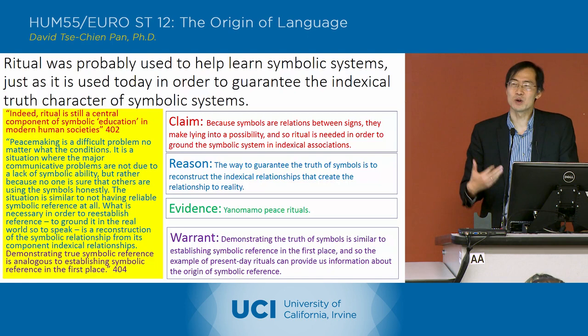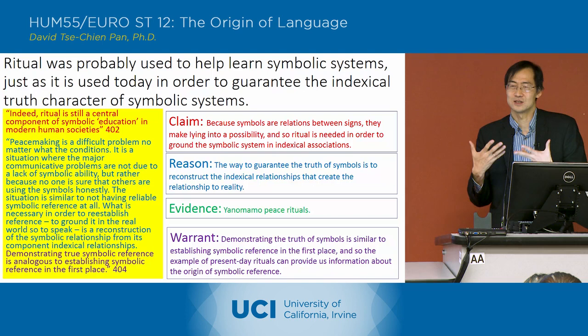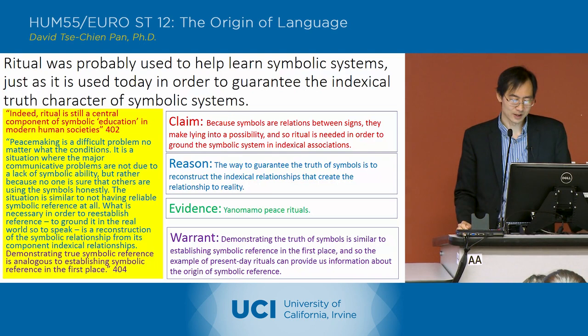He says that in the same way that rituals used today are used in order to guarantee the truth of symbols by reconstructing the indexical relationships upon which the symbol system is based, rituals could have been used to actually establish the indexical relationships that are underneath the symbolic relationships.